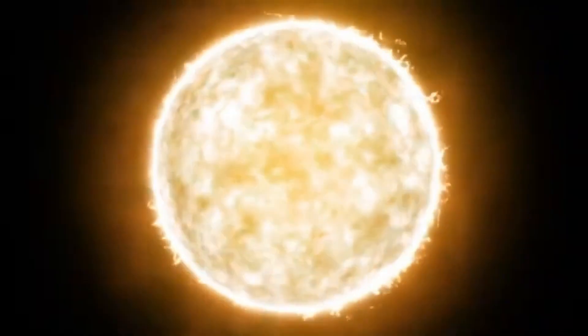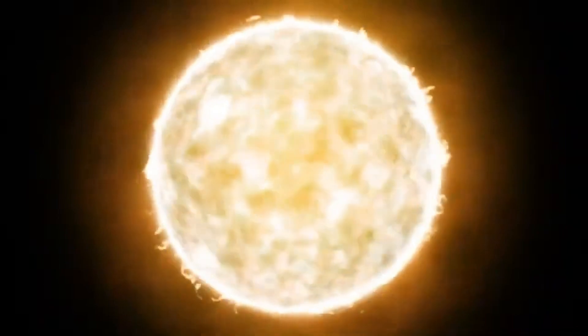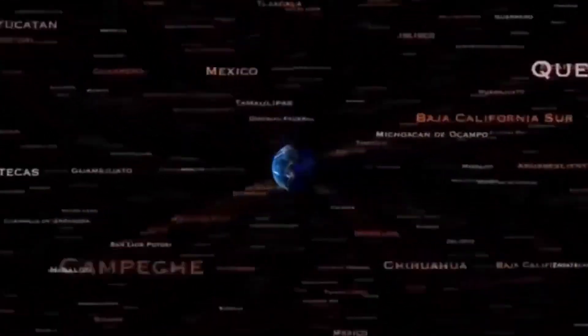The James Webb Telescope has been focused on Betelgeuse for months, using its infrared vision to peer into layers invisible to any previous observatory. And now, the data is in. What it shows is stunning.